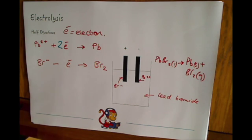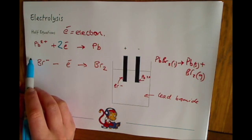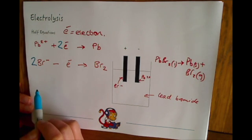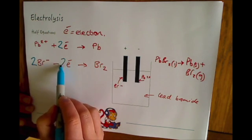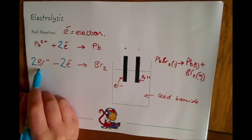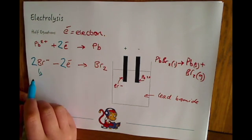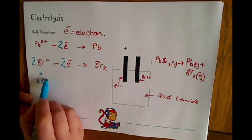So first of all because we've got two lots of Br over here, we need two Br minuses. And now we've got two minuses, we need to take away two electrons to get bromine.